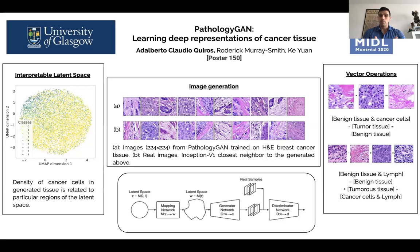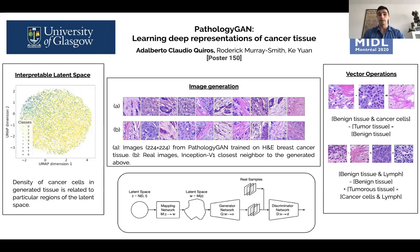For that, we put together a GAN that not only has high quality image generation, but also representation learning properties, such as an interpretable latent space, and a latent space that allows vector operations that hold semantic meaning.